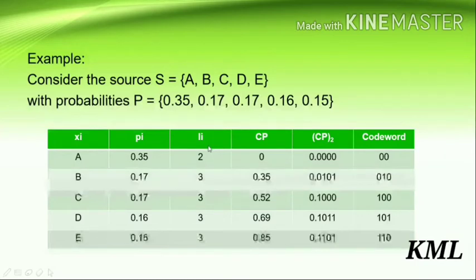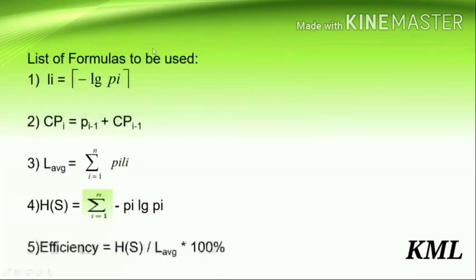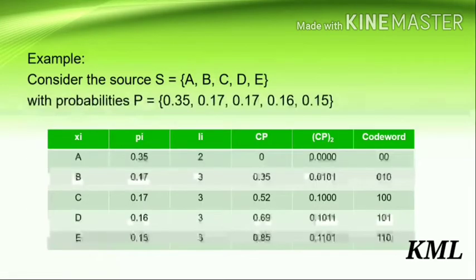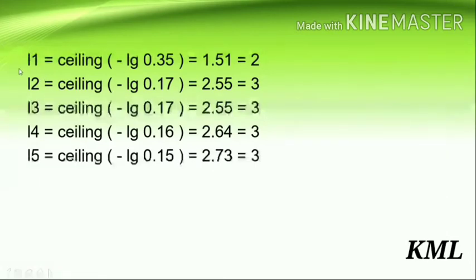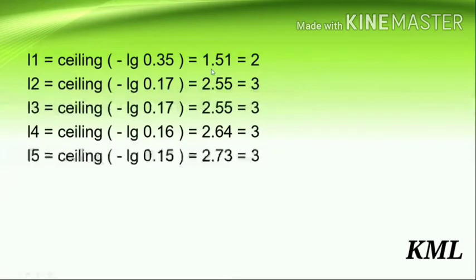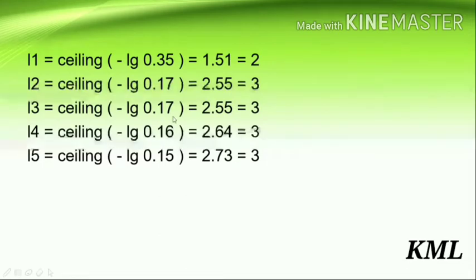After writing the decreasing order, write the corresponding source letters. Now calculate Li using the formula: Li equals ceiling of negative log base 2 of Pi. For L1: ceiling of negative log base 2 of 0.35 gives 1.51, and since it is a ceiling function we round to the next integer, giving 2. For L2: ceiling of negative log base 2 of 0.17 gives 2.55, rounded up to 3.